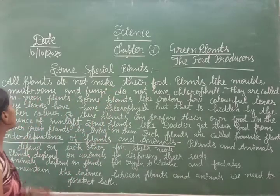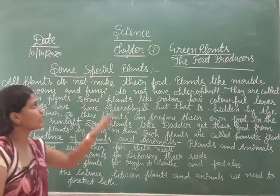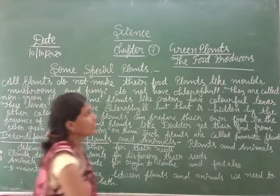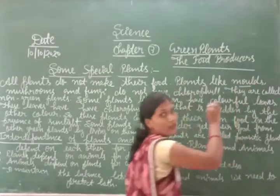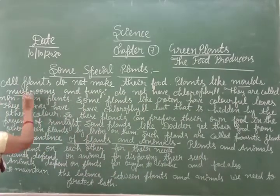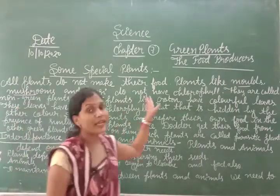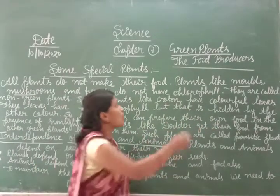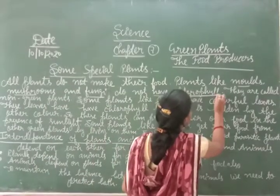Some special plants — these plants do not make their own food. For example, mushroom and fungi. They do not make their own food because they do not have chlorophyll, the green pigment. That is why leaves are green and plants are green.